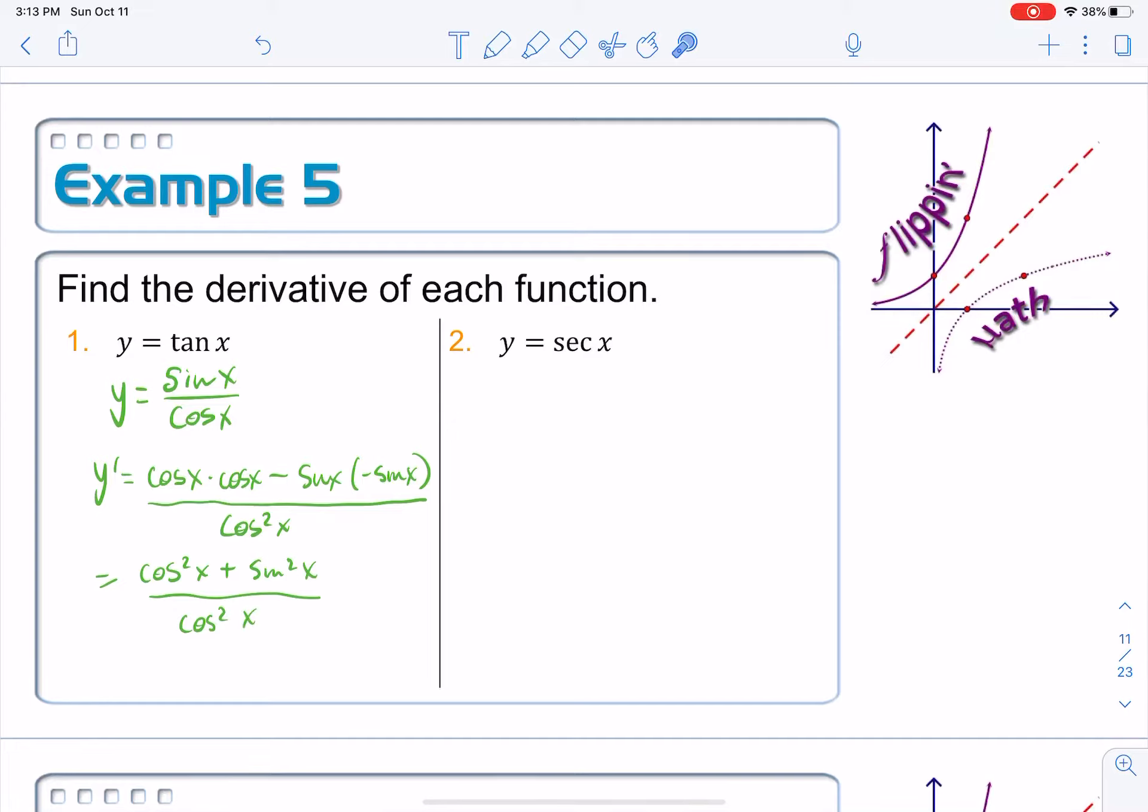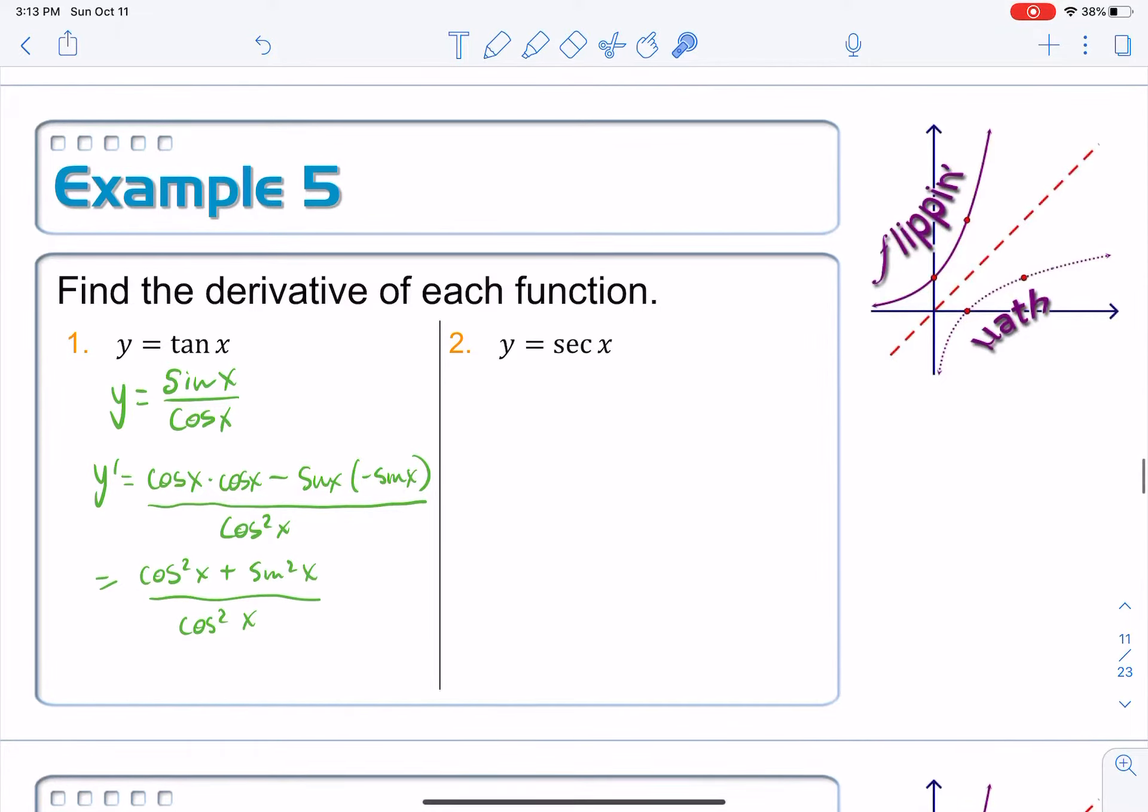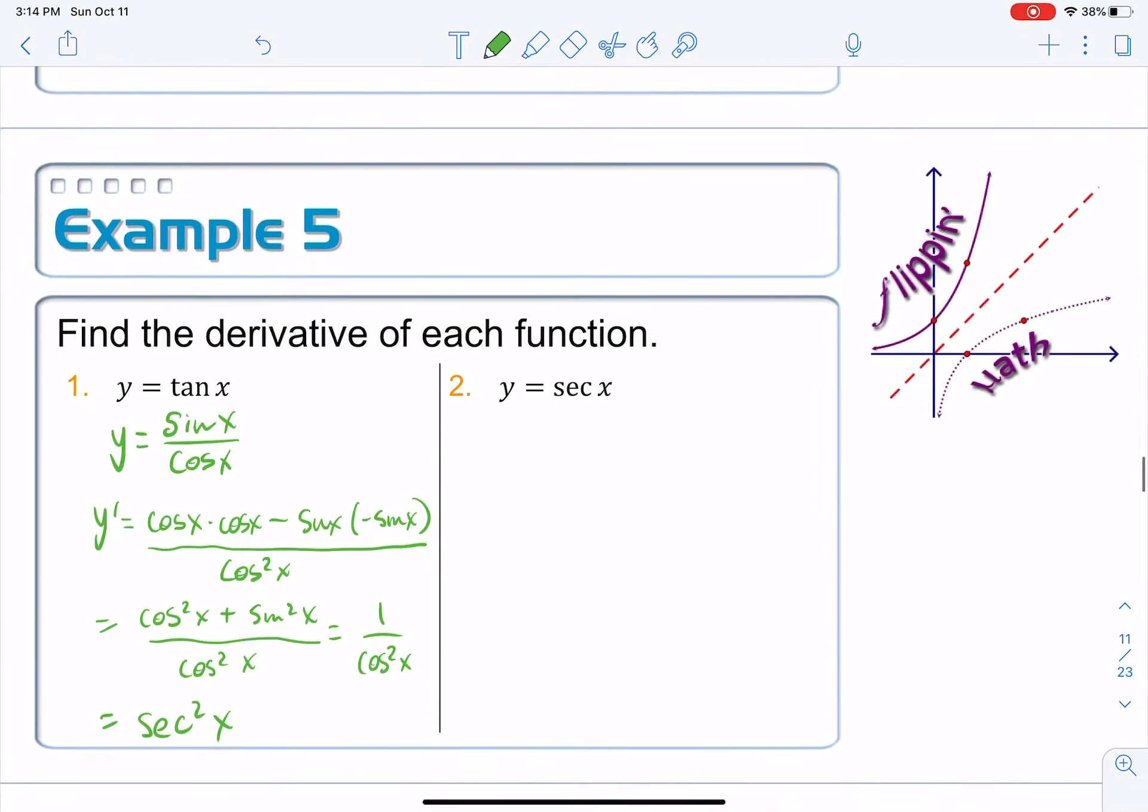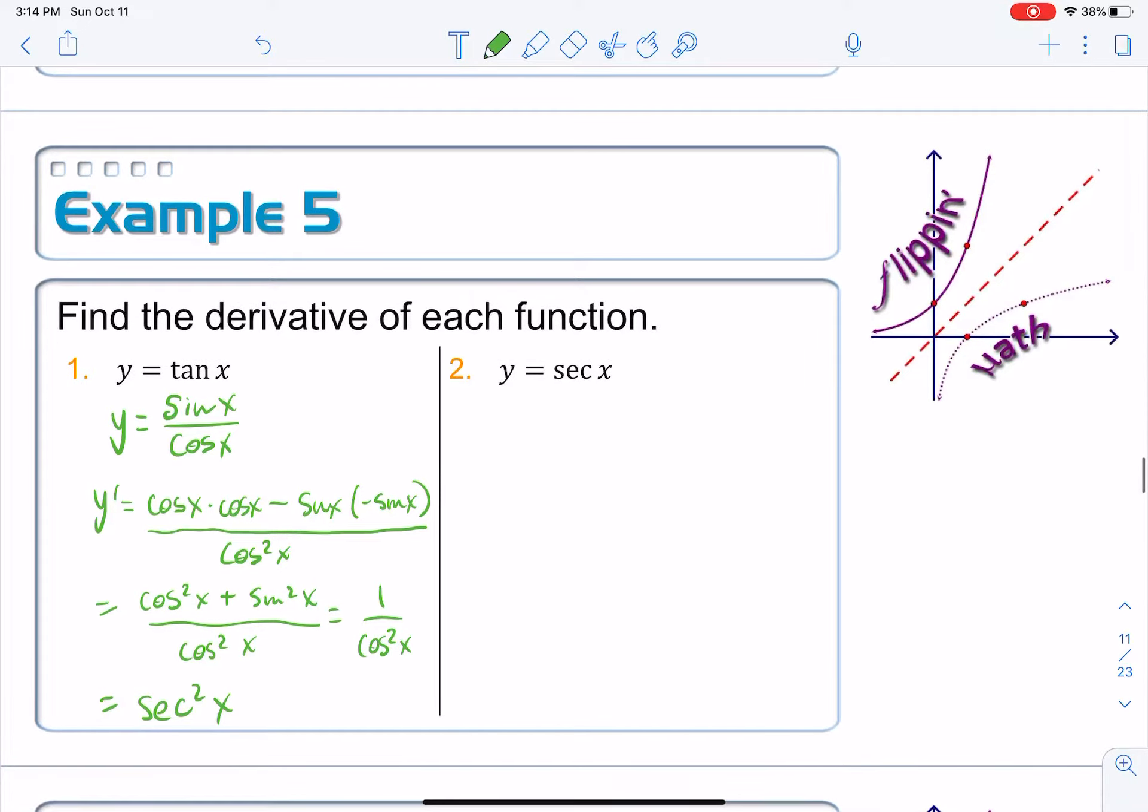Do these cosine squared x's cancel? Of course they don't. Don't you dare. Instead, make cosine squared plus sine squared equal to one by the Pythagorean identity. That's one over cosine squared x. And then I just have one more to do. This is a reciprocal identity - one over cosine. It's the definition of secant. It's secant squared x. So we just found the derivative of tangent. Derivative of tangent is secant squared.